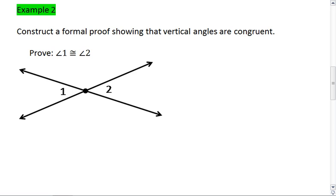Notice in this one, we're not explicitly told or given, but our given is that angle 1 and angle 2 are vertical angles.